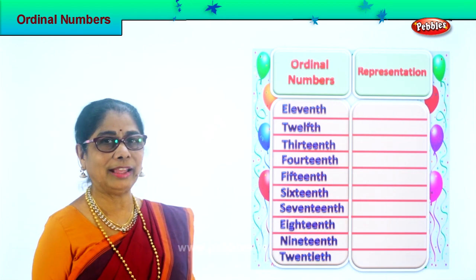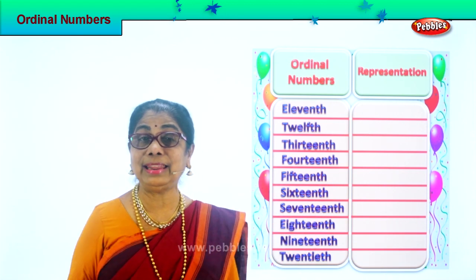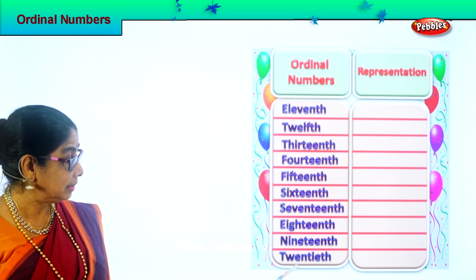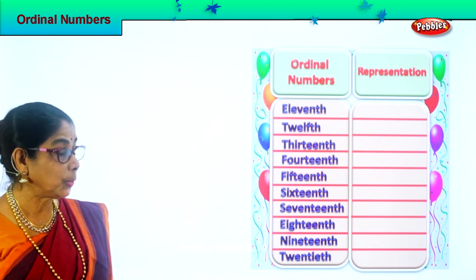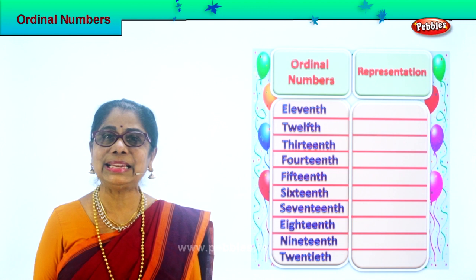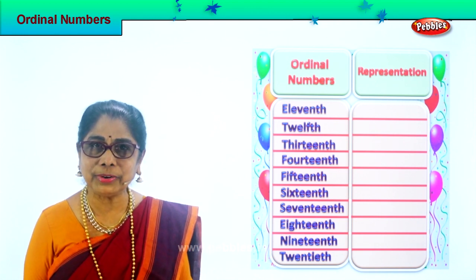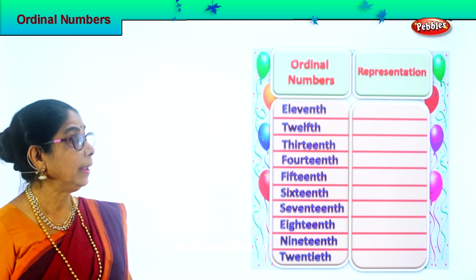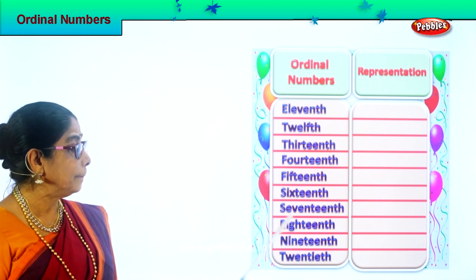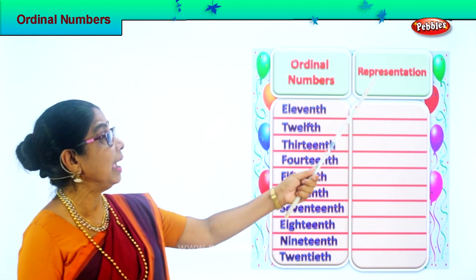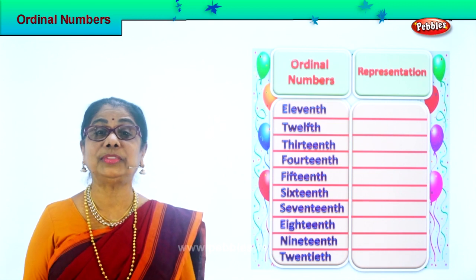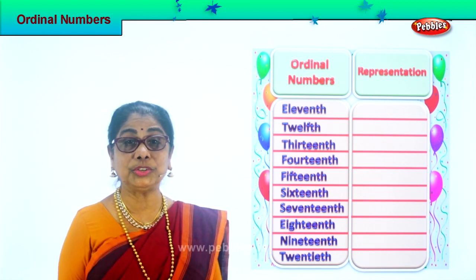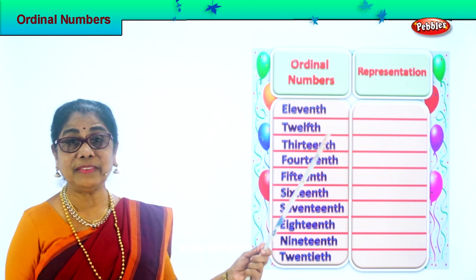We have already done 1 to 10. Now we have 11 to 20 — a little difficult, so look carefully and we'll learn the spelling. The ordinal numbers and spellings are here, and we represent each one just like we did from 1 to 10.